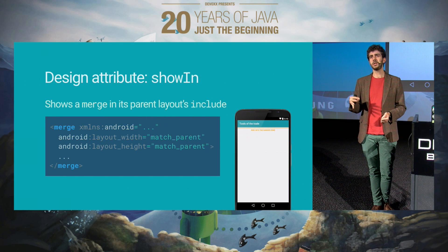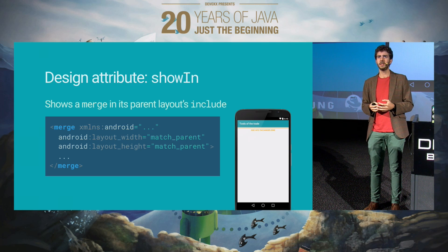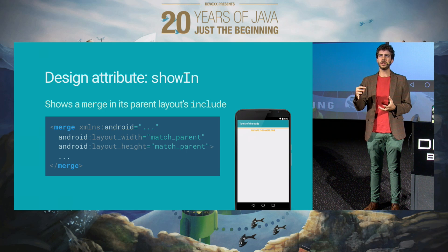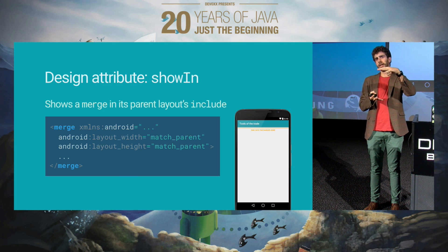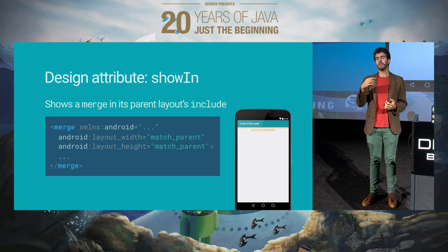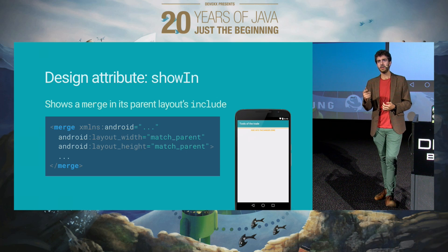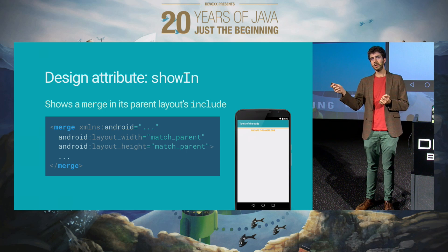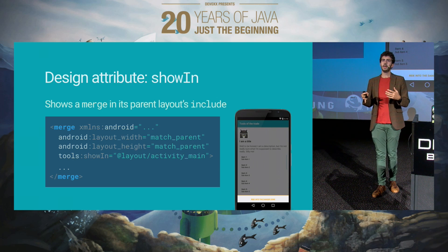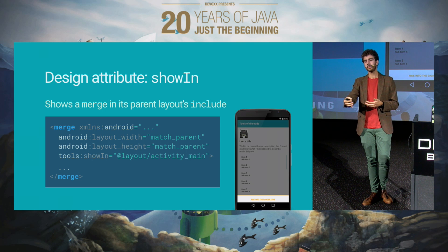Next one is called showIn. This is actually quite interesting. All of you, I hope, have used the mechanism of merge and includes. What merge does is basically say: this stuff I'm putting inside this XML file is going to be inflated inside something else, but I don't want to create another useless parent view group. The problem is that by default the merge layout preview is shown in an empty screen and considered to be a FrameLayout. What you can do is, if you have a corresponding include in another layout, you can say showIn, and instead of a boring preview it will show you the proper preview — as if the include were inflated in the right place.